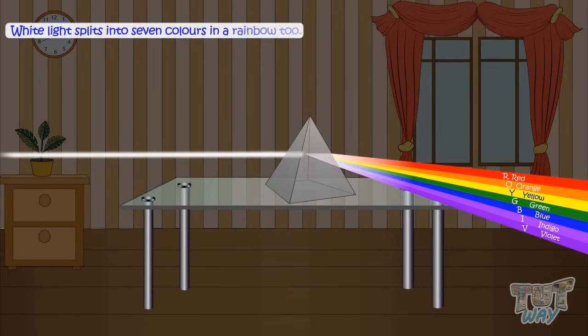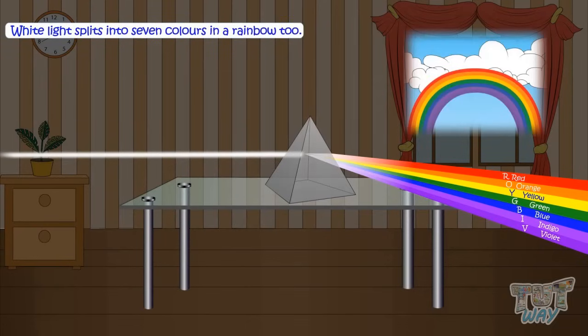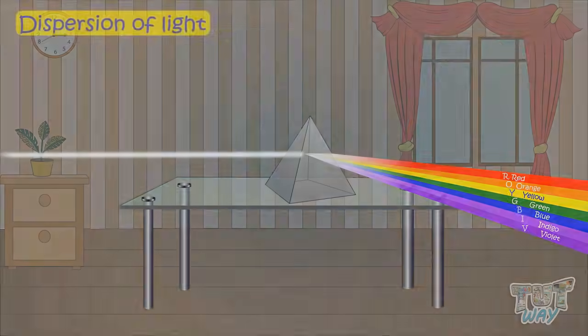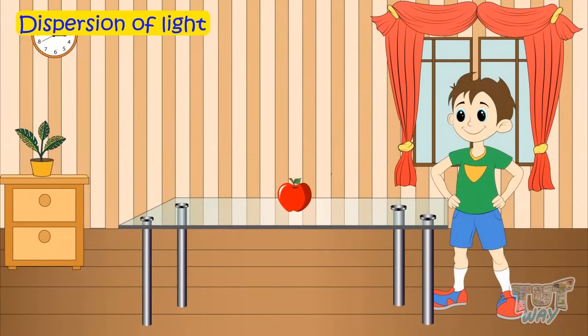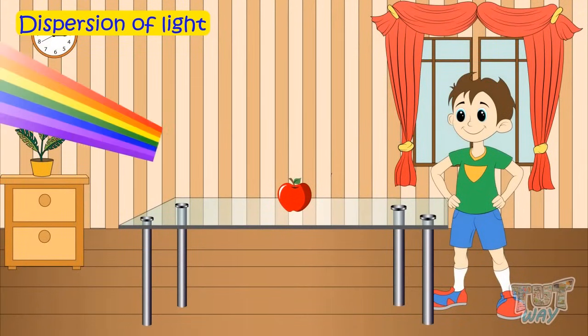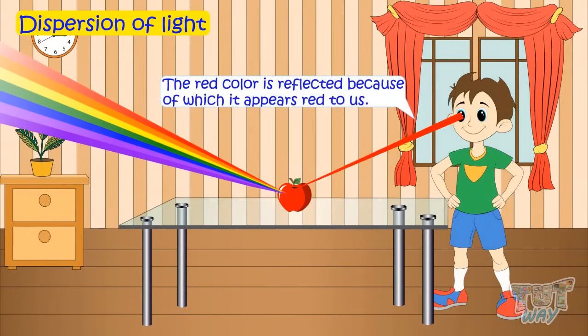You often see white light splitting into seven colors in a rainbow too. Whenever light falls on an object, for instance, the red object, all other colors of the light are absorbed by the object and only the red color portion of the light is reflected back. And that is why the object appears red to us.